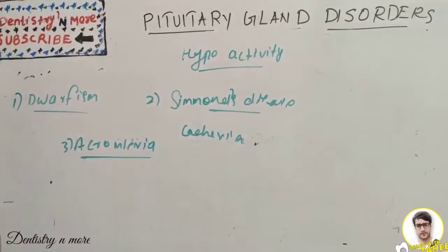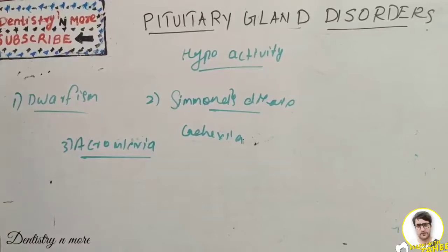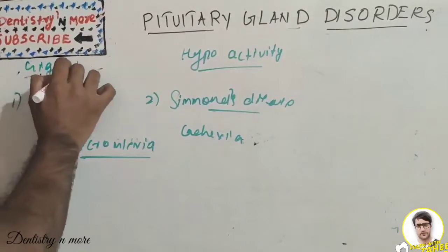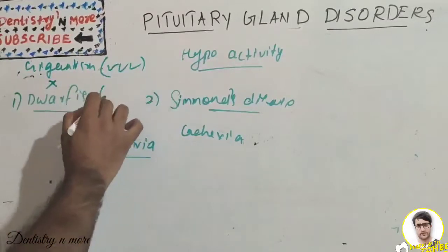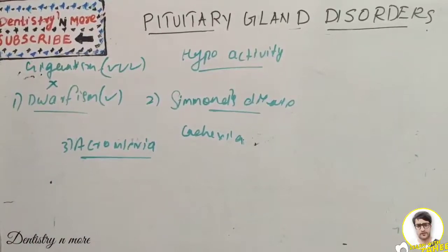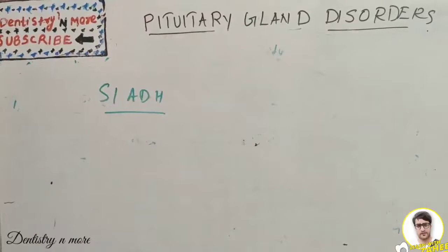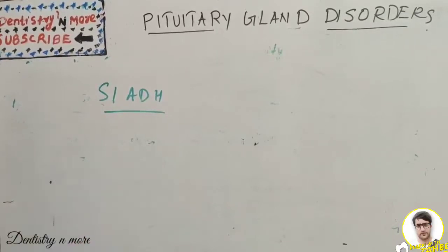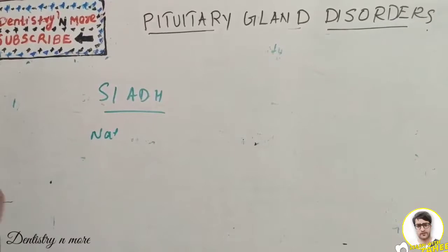To summarize pituitary disorders: hyperactivity includes gigantism, acromegaly, and Cushing's disease, while hypoactivity includes dwarfism, Simmons disease, and acromicria. For the posterior pituitary, hypersecretion causes SIADH — Syndrome of Inappropriate Hypersecretion of Anti-Diuretic Hormone — characterized by loss of sodium through urine due to hypersecretion of ADH. It can be caused by a tumor or lung cancer.